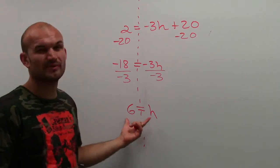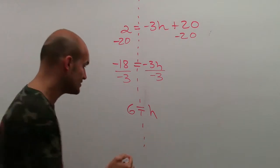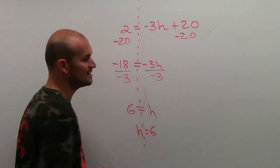Then what I'm going to do is we really don't like to leave it as 6 equals h. What I'm going to use is the reflection property to switch it around and write h equals 6.